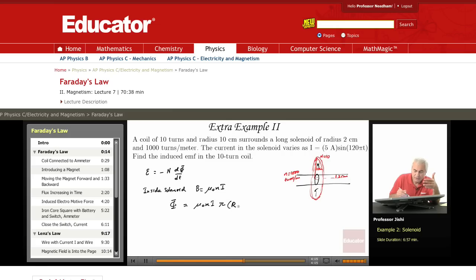Radius of the solenoid squared. So it's 4π × 10⁻⁷, if you like, times n, which is a thousand.